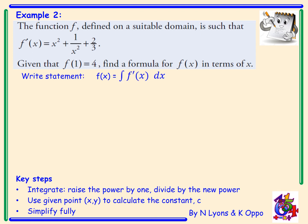First, we'll write the statement: f(x) equals the integral of f'(x) with respect to x. Sub in the derivative, so f(x) equals the integral of x squared plus 1 over x squared plus 2 thirds dx. Before we integrate, we need to prepare: the integral of x squared plus x to the minus 2 plus 2 thirds dx.